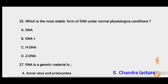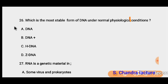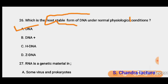Question 26: Which is the most stable form of DNA under normal physiological conditions? Under normal physiological conditions, the most stable form of DNA is B-DNA. Two factors are mainly responsible for the stability of the DNA double helix: one is base pairing between complementary strands, and the second is stacking between adjacent bases. Base stacking is the most stabilizing factor.